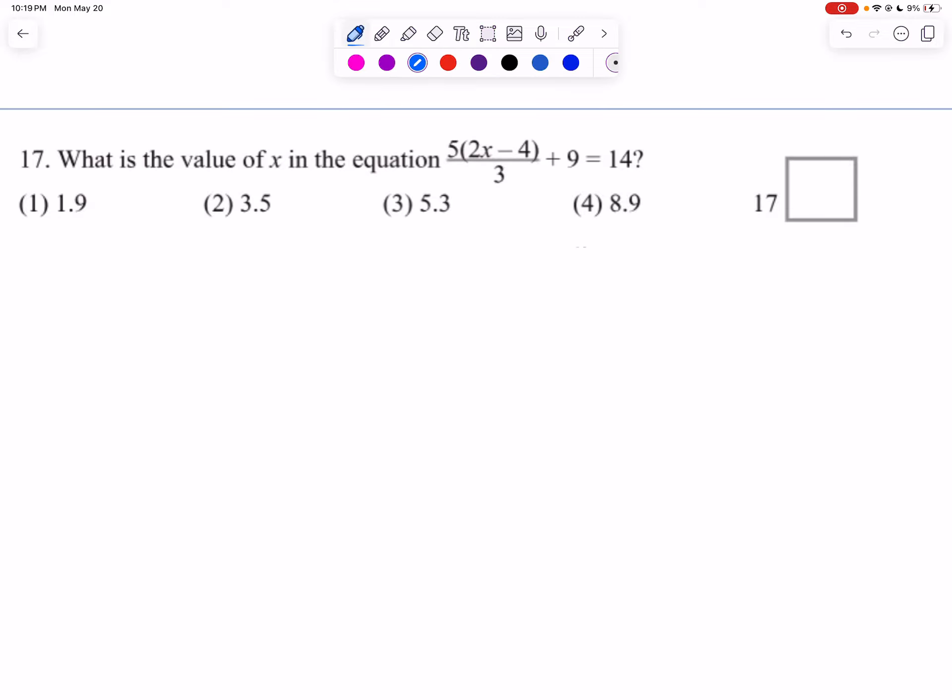So the first thing I'm going to do is I'm actually going to rewrite my equation. So I'm going to rewrite 5 times 2x minus 4 divided by 3 plus 9 equals 14.